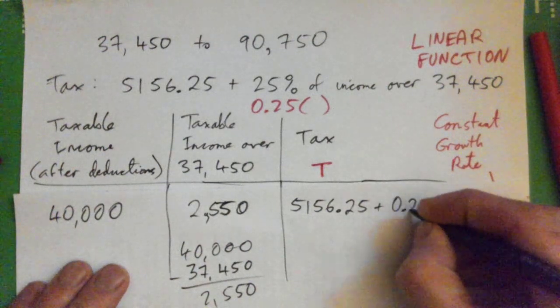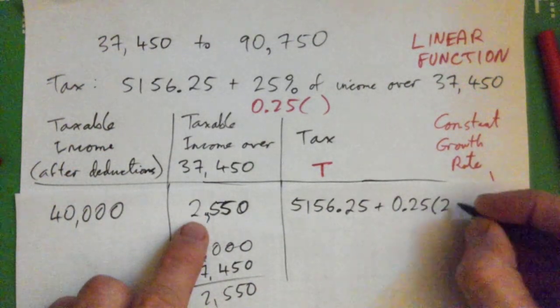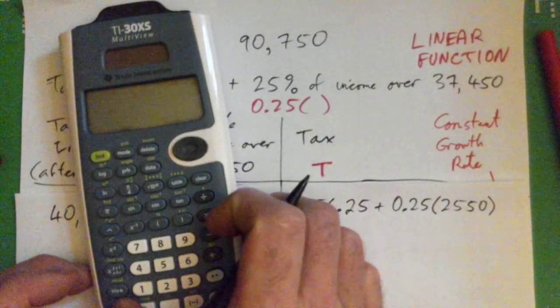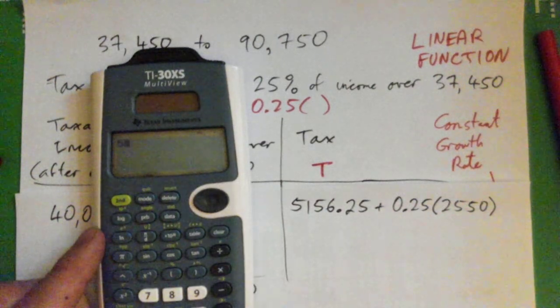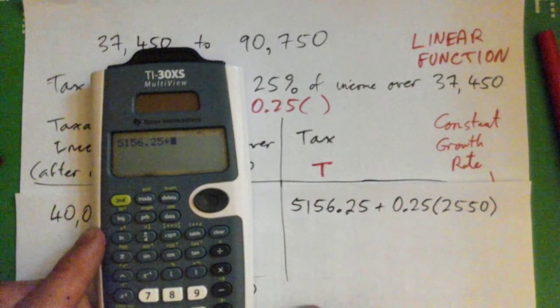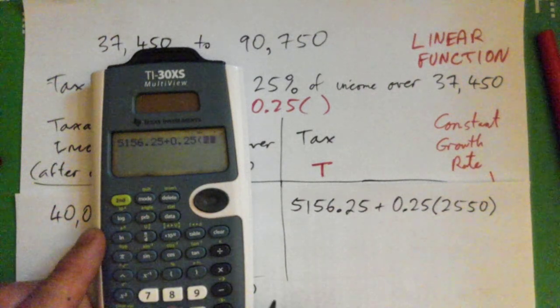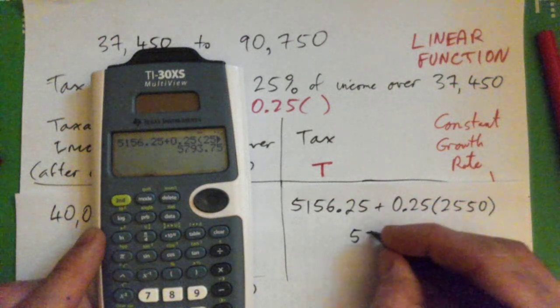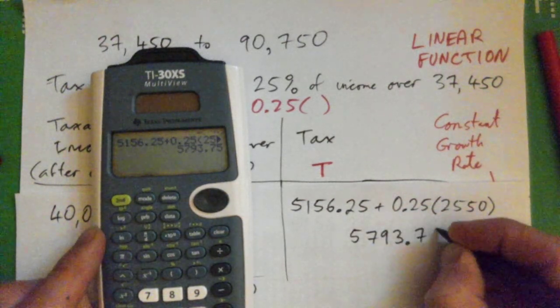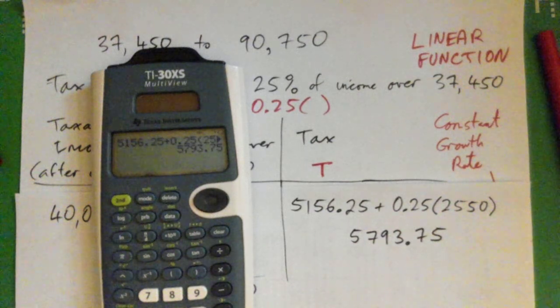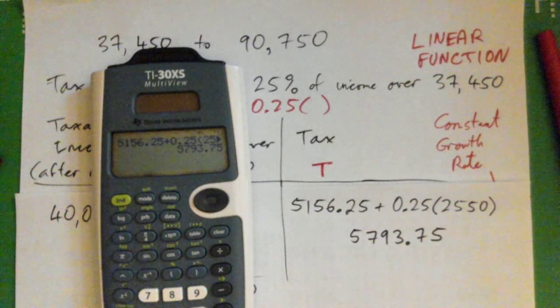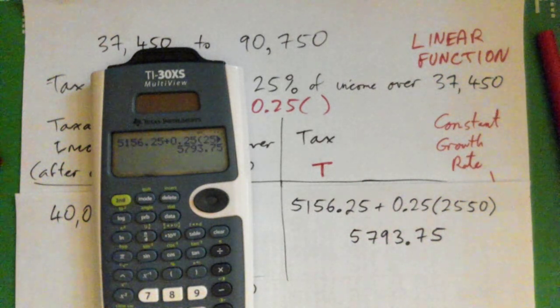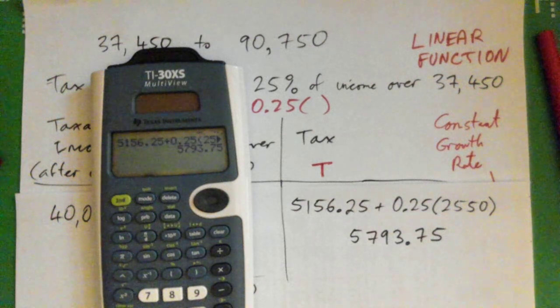So plus 0.25 times 2,550. Plug that in the calculator, and that's our tax: $5,793.75. Okay, I think we're good on that then.